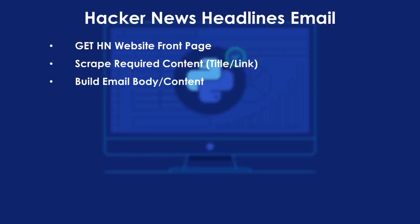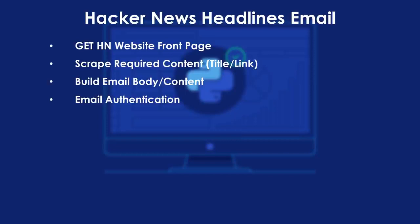The next step is to build the email body from the scraped content. We'll arrange it so the email body looks like a news presentation, with a title, a link, and a number. Once we have the email body ready, we'll move on to the email authentication section, using our Gmail ID to authenticate. We'll use the Python package smtplib to set up SMTP authentication, then send the email using the email body we've set up.